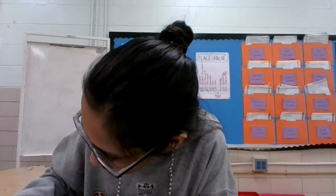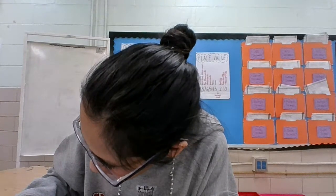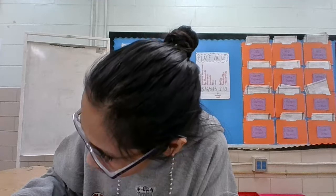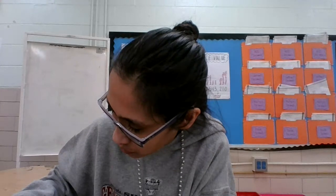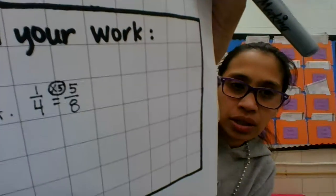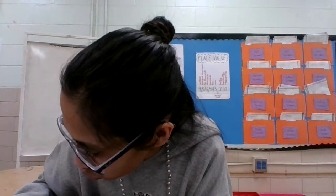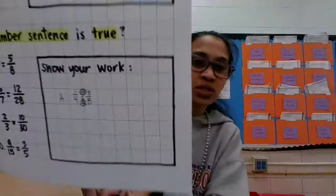I'll write it on this side. To go from one to five, what do I do? I multiplied it by five. And to go from four to eight, I multiply it by two. So are these equivalent to each other? No, they are not, because we didn't multiply by the same factor. Remember, it has to be the same factor — that's a five and a two — so these are not true.